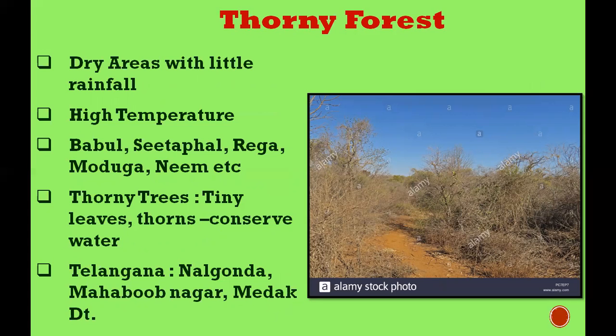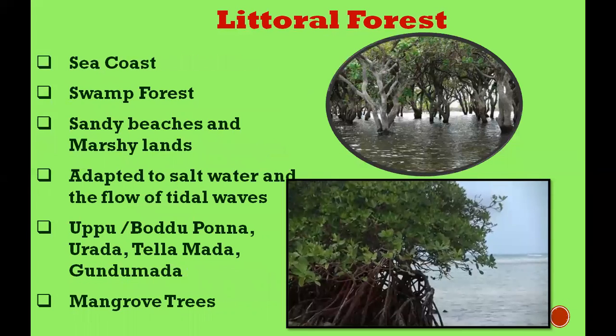The third type is thorny forest, found in places that are very hot with very little rainfall — near dry areas or deserts. This type of forest is also found in Telangana. The climatic condition is high temperature and less rainfall. Trees found here include babul, sitaphal, regi, and neem. These thorny trees have tiny leaves and thorns that help them conserve water.